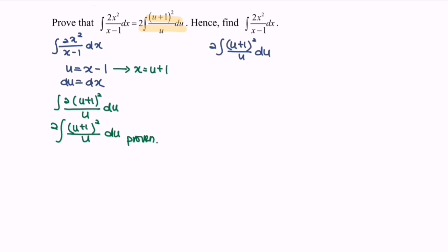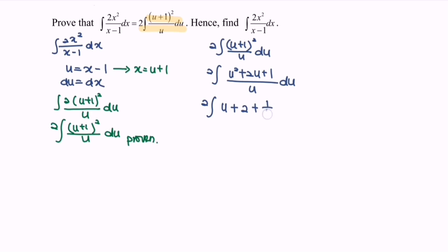First of all, we expand the situation, giving 2 times the integral of (u² + 2u + 1) over u with respect to u. Secondly, simplify to get 2 times the integral of (u + 2 + 1/u) with respect to u. Next, integrate to get 2 times [u²/2 + 2u + ln|u|] + c.